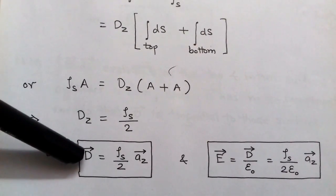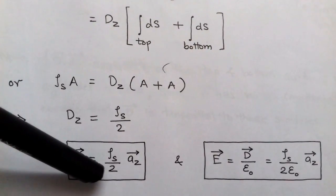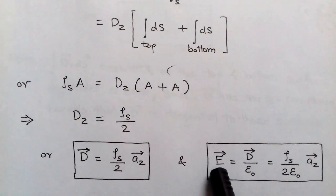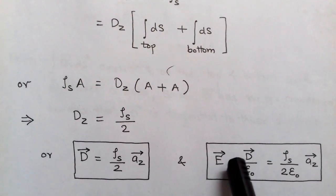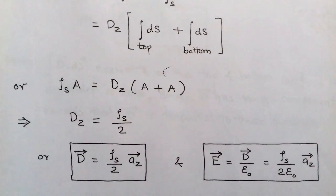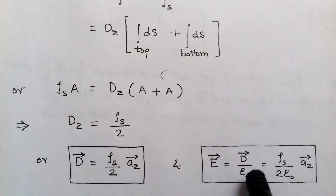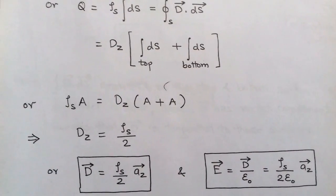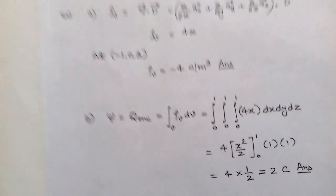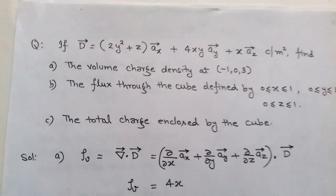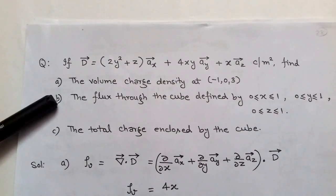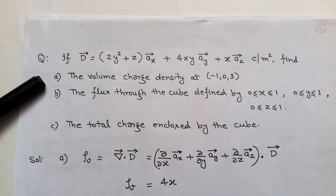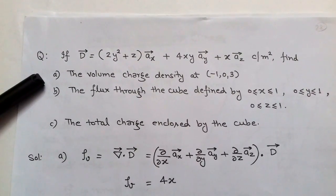In vector form, D = (ρs / 2) â_z. We can also calculate the electric field intensity E = D / ε₀ = ρs / (2ε₀) â_z. Now, a problem is given: D = (2y² + z) â_x + 4xy â_y + x â_z coulombs per meter squared.